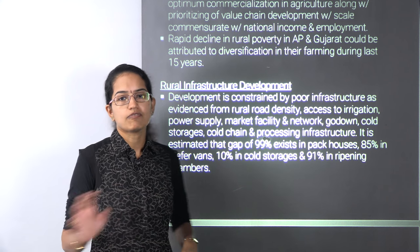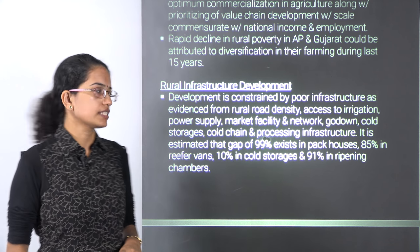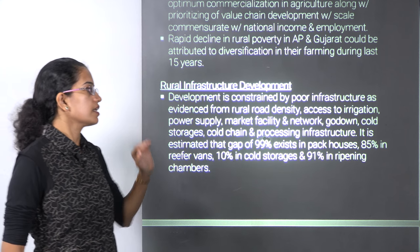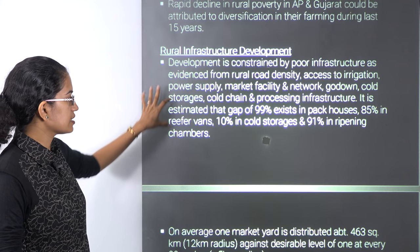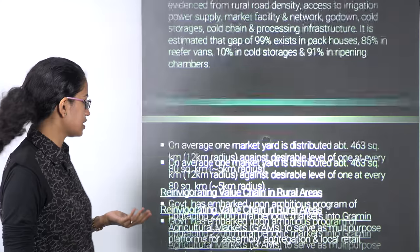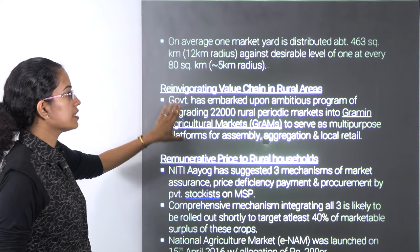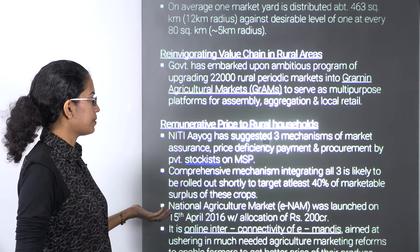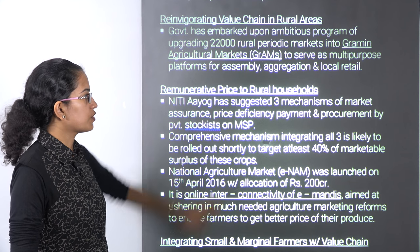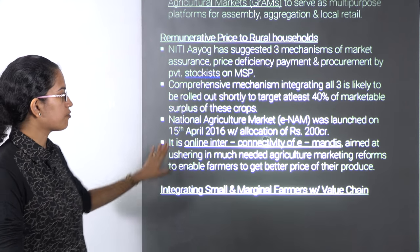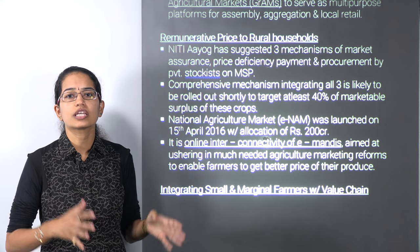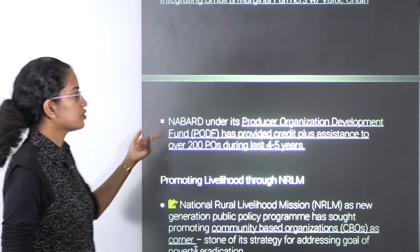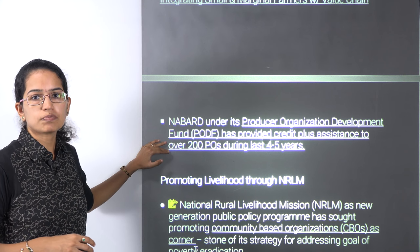One of the major developments to make rural areas sustainable is to focus on infrastructure — market facilities, good cold chain, go-down facilities, and processing infrastructure. We also talk about bringing in the Grameen Agricultural Market, which serves as a platform for assembly, aggregation, and retail purposes. Bringing in good prices for rural households through online interconnectivity of e-mandis through eNAM — the Electronic National Agricultural Market — is one of the targets. We also talk about a value chain mechanism through a Producer Organization Development Fund, known as PODF, which provides credit-plus assistance to over nearly 200 producer organizations.